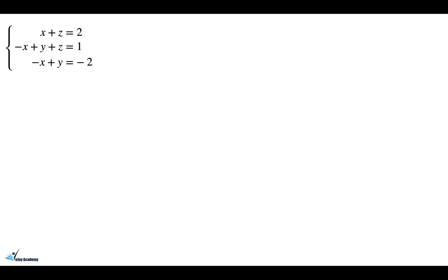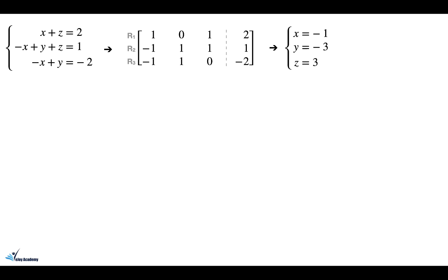Let's take a look at another example. We have a system of three linear equations: the first equation is x plus z equals 2, the second equation is minus x plus y plus z equals 1, and the third equation is minus x plus y equals minus 2. The first step is to obtain the matrix format, which is shown here, and if you solve this system of equations you would get x equals minus 1, y equals minus 3, and z equals 3. If you're interested in the detailed solution, you can check the PDF file attached to the description below this video.